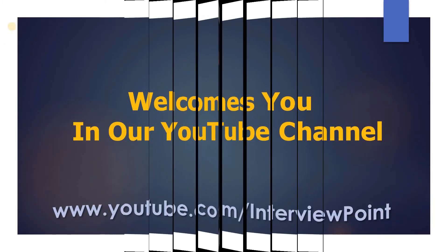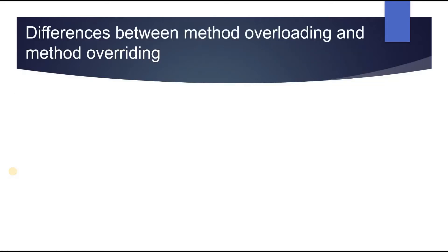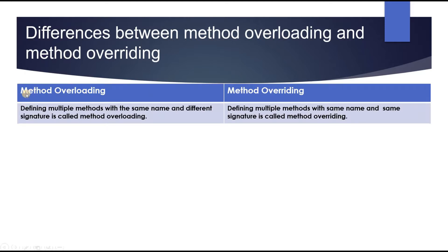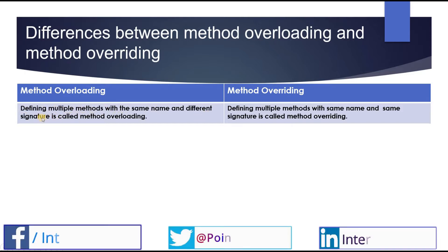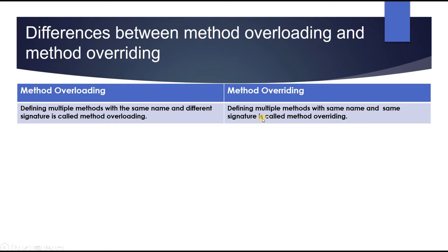Hello friends, this is DK Gautam. Thank you for joining Interview Point. In this video I will discuss the differences between method overloading and method overriding. Defining multiple methods with the same name but different signatures is called method overloading. Defining multiple methods with the same name and same signature is called method overriding. Signature refers to the number of parameters in the method.